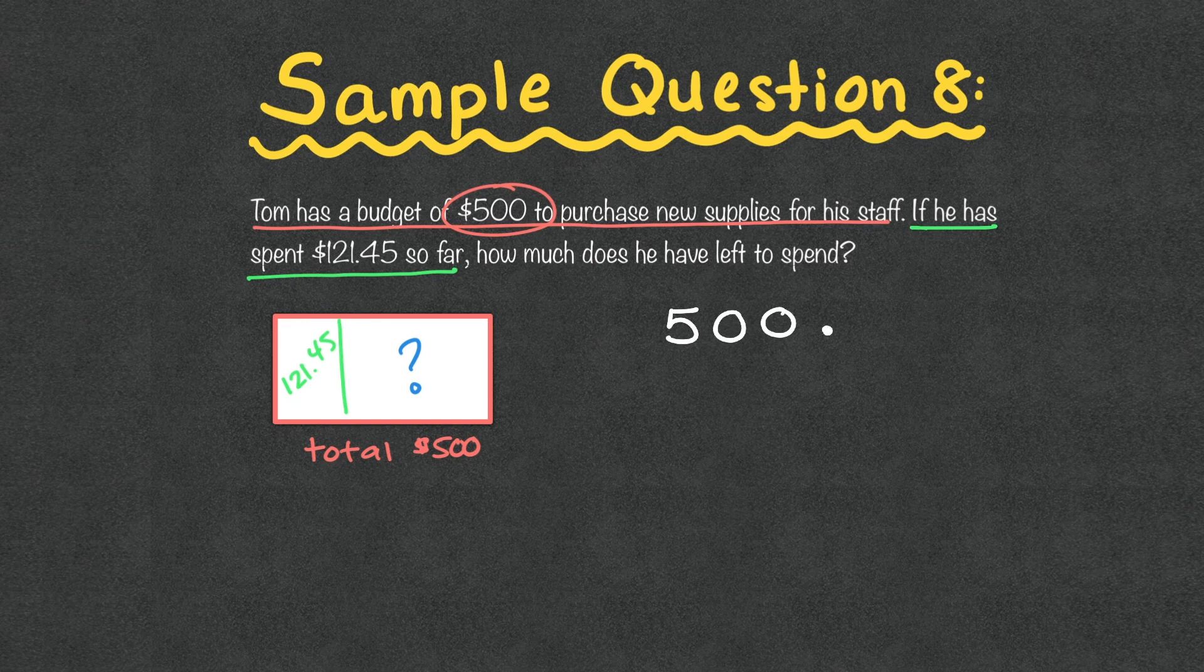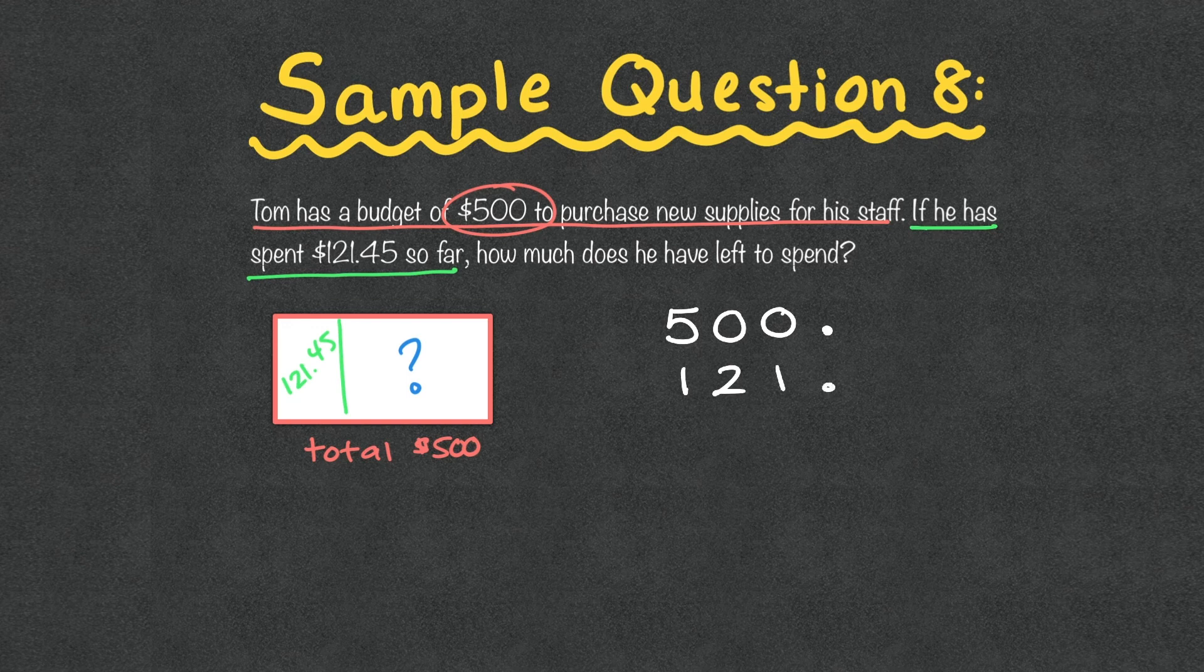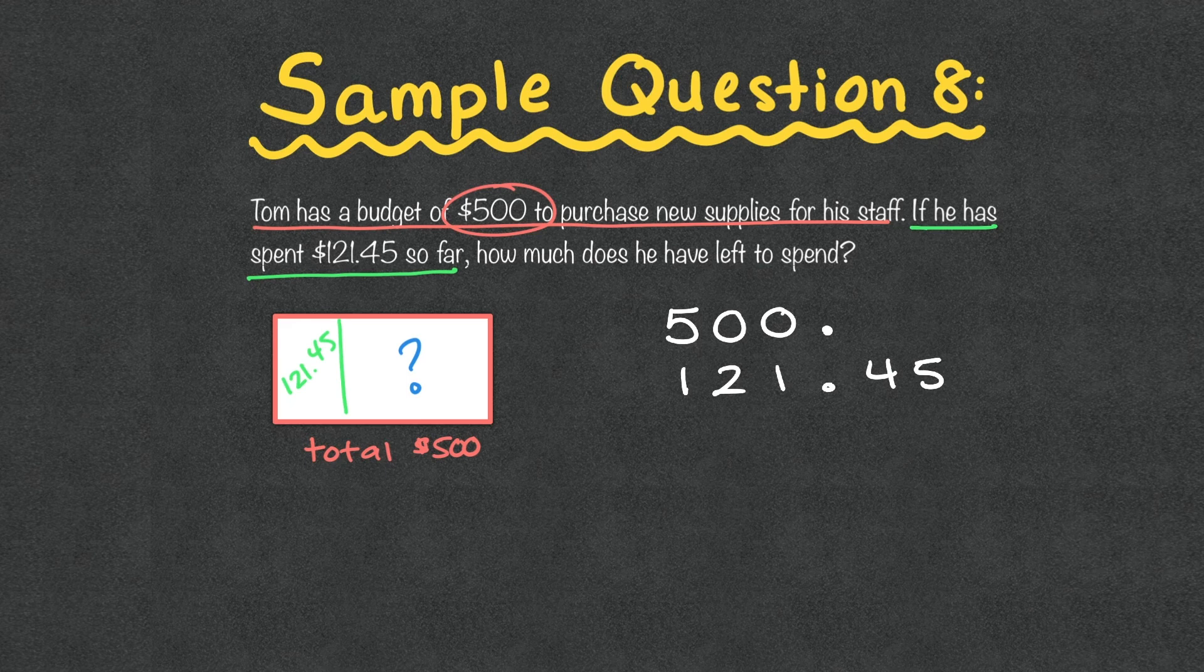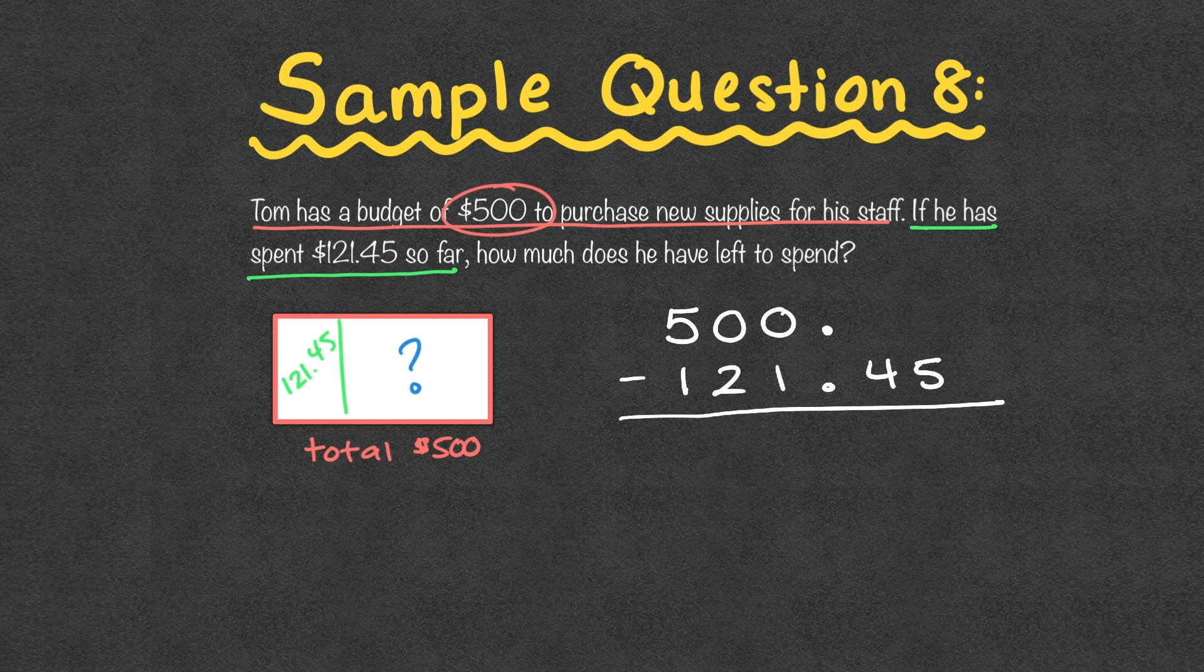And now we are looking for what is left. So in order to do that, we know that to find this piece that it must be a subtraction problem. So we're going to take $500. And I'm going to put the decimal point here to make sure mine are lined up. 121, and 45 hundredths. In this case, it is money. So excuse me, it is $121.45. And we are going to subtract. Again, putting in our placeholder zeros just to make sure we have the number there.